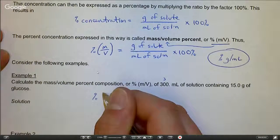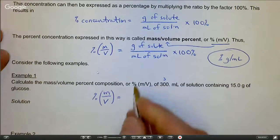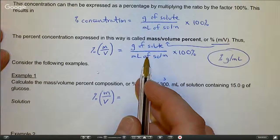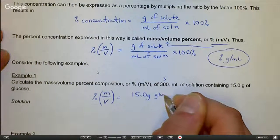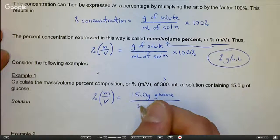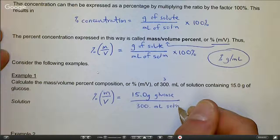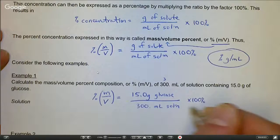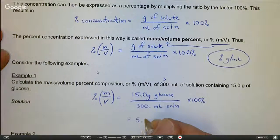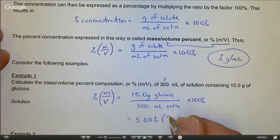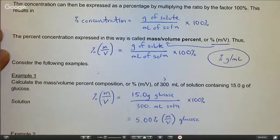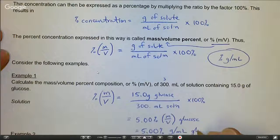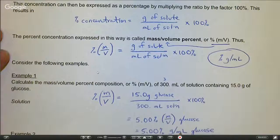Our mass volume percent equals grams of solute over milliliters of solution times 100%. We have 15 grams of glucose divided by the 300 milliliters of the glucose solution. This comes out to 5.00 percent mass volume of glucose, or 5.00 percent grams per milliliter of glucose, recognizing the grams is the mass, the milliliters is the volume.